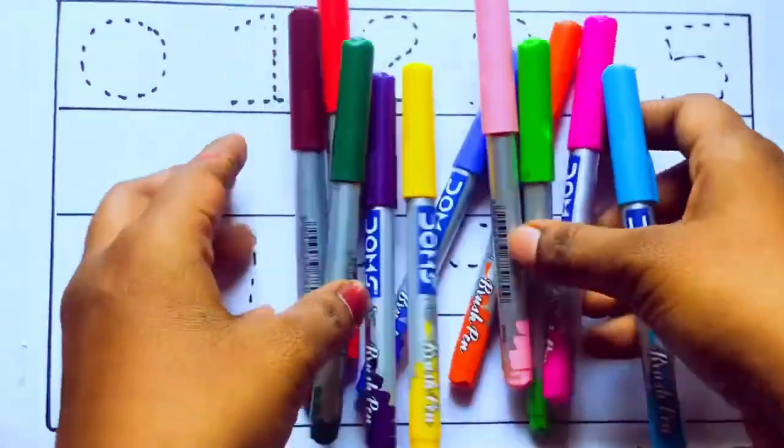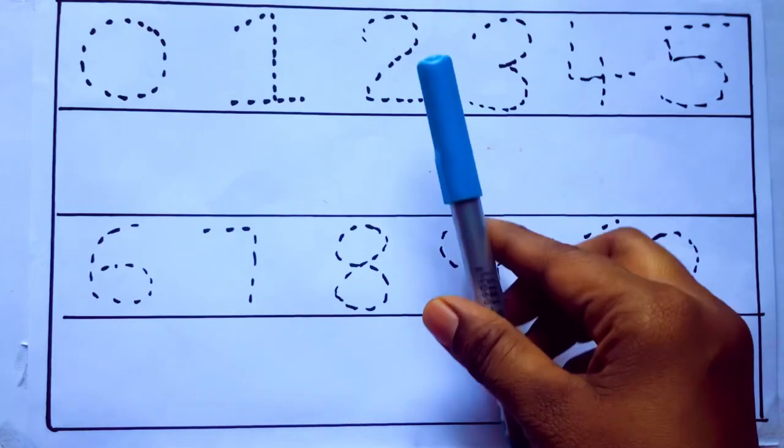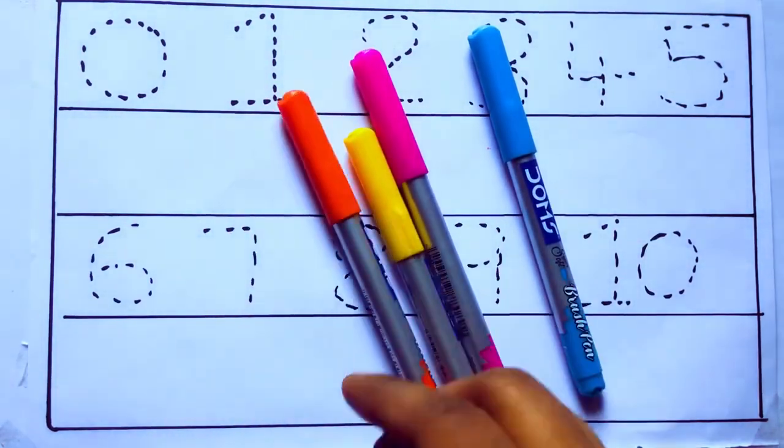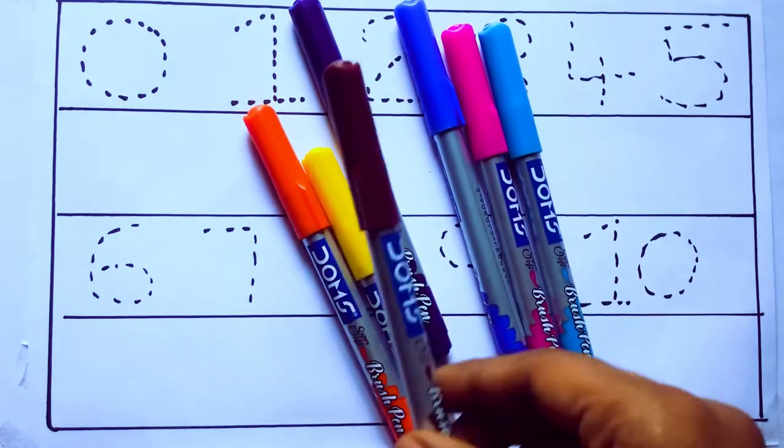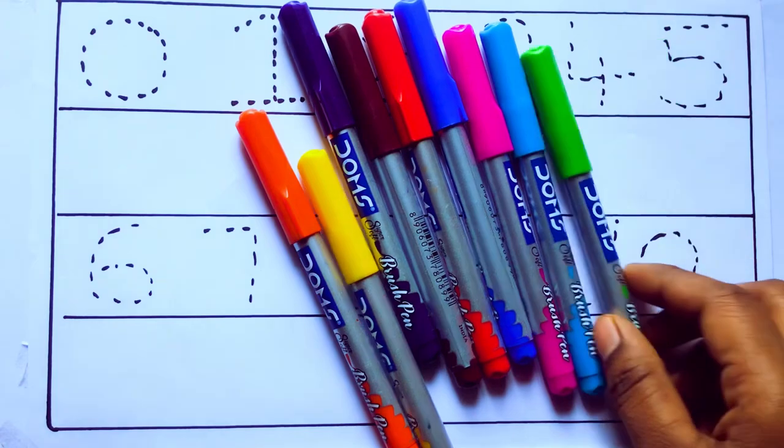Let's learn some colors. These are all the color pencils. Let's learn the names: sky blue, pink, yellow, orange, violet, blue, brown, red, and green.